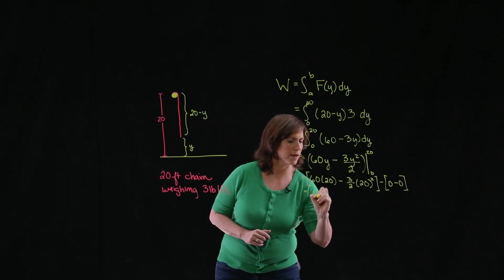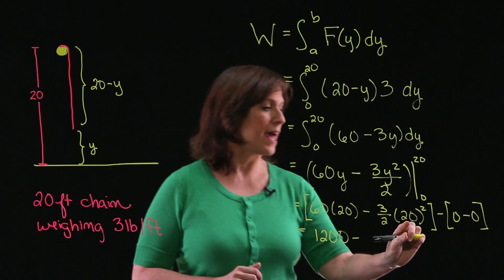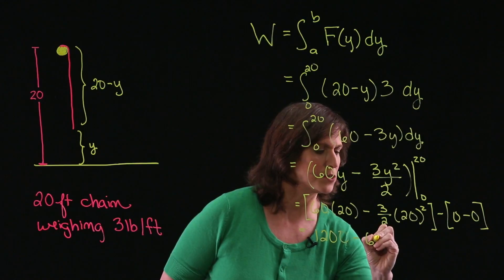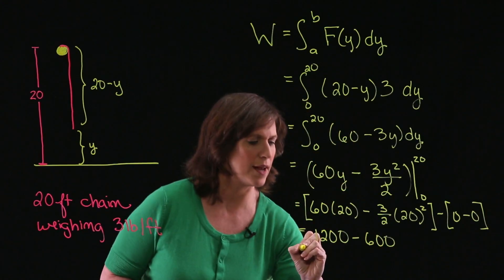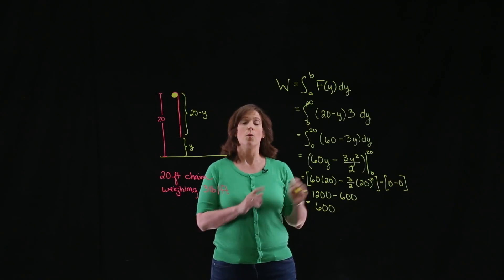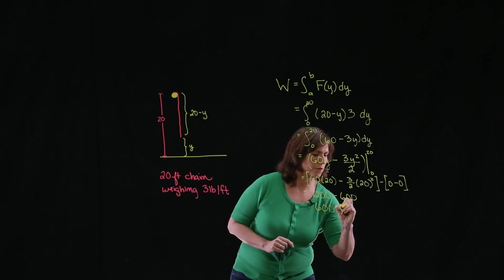So I end up with 1,200 minus, and 20 squared is 400. That will cancel with the 2, and 3 times 200 is 600. And we end up with 600. We're measuring work, and it's going to be in foot-pounds.